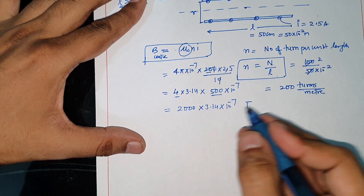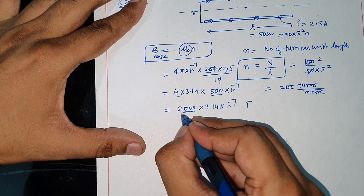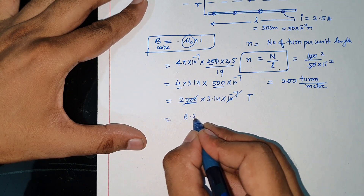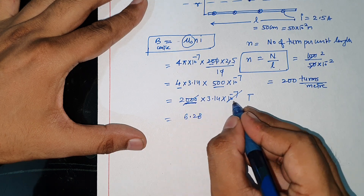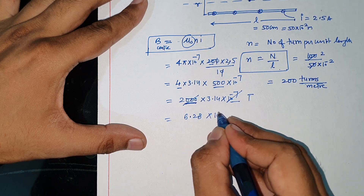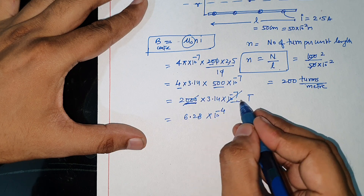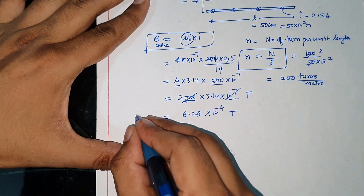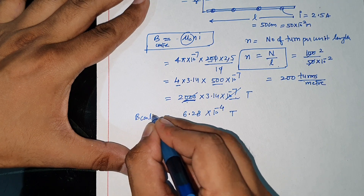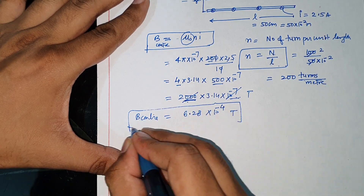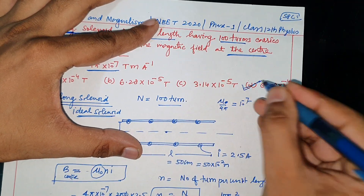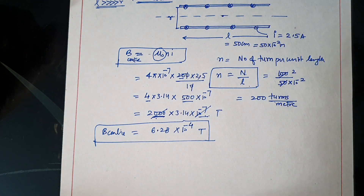10⁻⁷ ka multiply karein toh 2000 × 3.14 × 10⁻⁷ Tesla. 10³ se yeh kat liya, toh 2 × 3.14 = 6.28, aur 10³ × 10⁻⁷ = 10⁻⁴ Tesla. Toh B center = 6.28 × 10⁻⁴ Tesla. Itna center par magnetic field aayega. Umeed karta hoon ki aapko yeh question zaroor samajh mein aaya hoga — padhte rahiye aur khush rahiye.